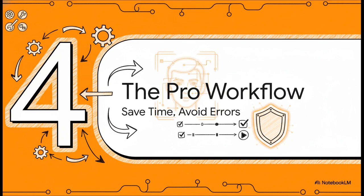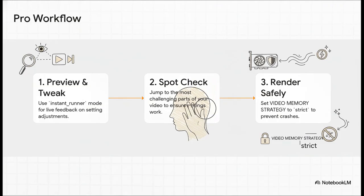Now let's put it all together into a professional workflow that will save you a ton of time and help prevent errors from happening in the first place. This is the efficient three-step pro workflow. First, preview and tweak — use the instant runner mode, which gives you a live preview so you can see changes in real time without rendering the whole video. Second, spot check — go find the hardest parts of your clip, like the scene with a hand waving in front of the face, and make sure your settings are actually working there. Finally, render safely — for that final long export, always set the video memory strategy to strict. This prevents your graphics card from running out of memory and crashing an hour into a render. It is a lifesaver.